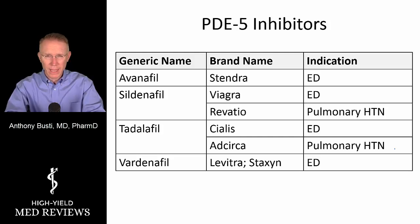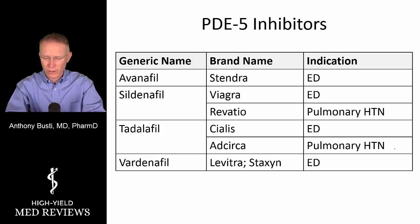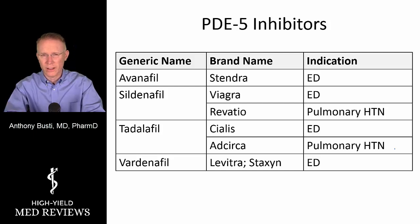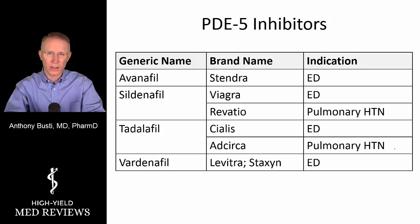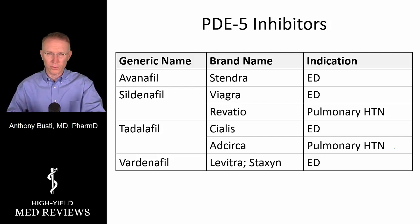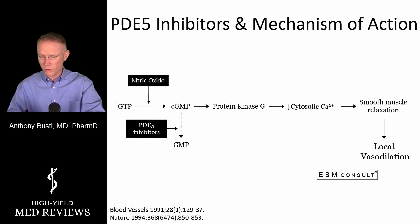One thing that differentiates these products is their half-life. Most agents — Avanafil, Sildenafil, and Vardenafil — have a half-life of around four to five hours, whereas Tadalafil has a half-life of approximately 15 up to as high as 35 hours, making its duration obviously longer. This becomes highly relevant in the context of this drug-drug interaction.